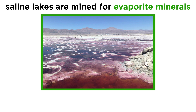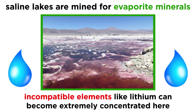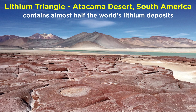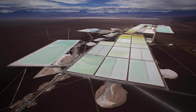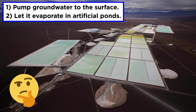Saline lakes like Searles are often mined for their evaporite minerals, but the real money lurks beneath the surface, dissolved in the super salty groundwater of the lake basin. There are certain elements that don't really like to form crystals and would rather remain dissolved in a fluid — these elements are said to be incompatible. It turns out that lithium is one of these incompatible elements, which can get extremely concentrated in some saline lakes. Almost half of the world's lithium reserves are located in the Lithium Triangle, a series of saline lakes in the Atacama Desert of South America. To harvest the lithium, all one must do is pump groundwater to the surface and let it evaporate in large artificial ponds. Unfortunately, water is already scarce in these regions, so pumping out millions of gallons of groundwater presents a huge problem to the local population and ecosystem.